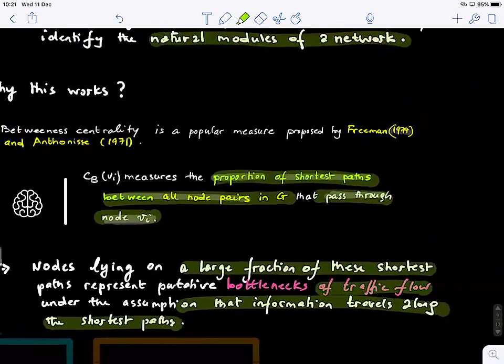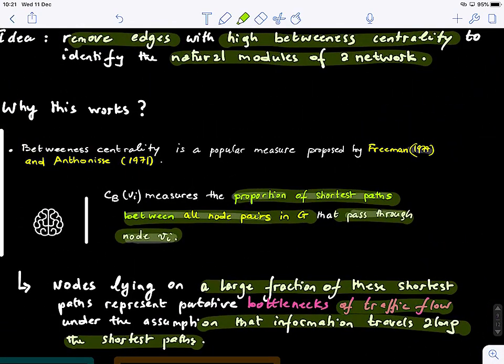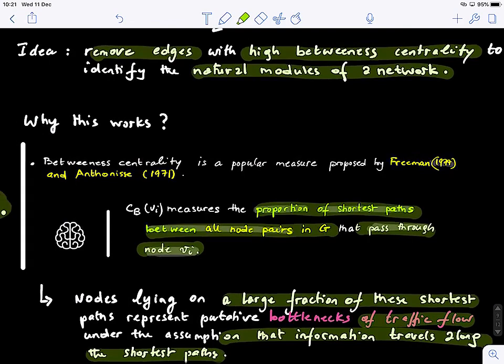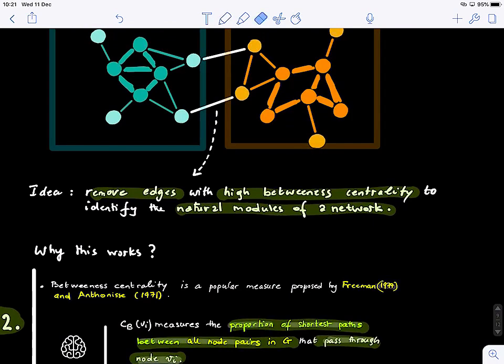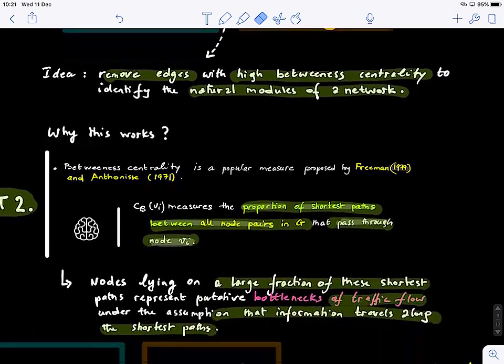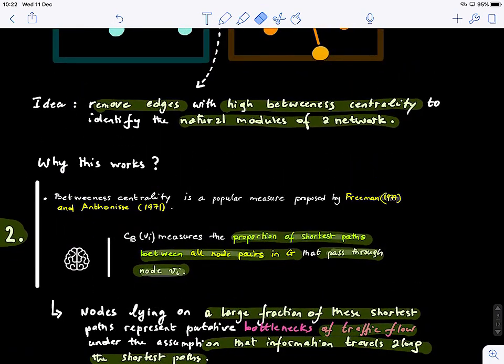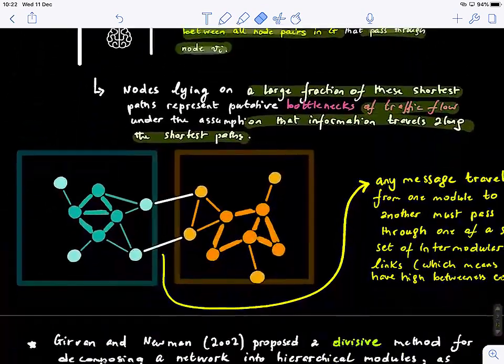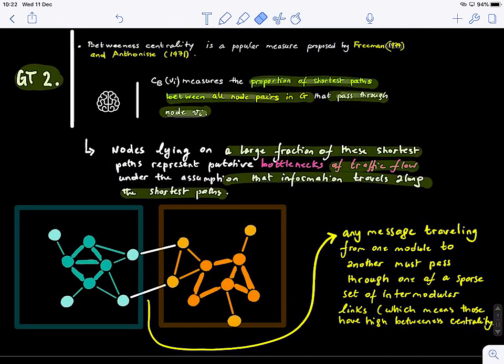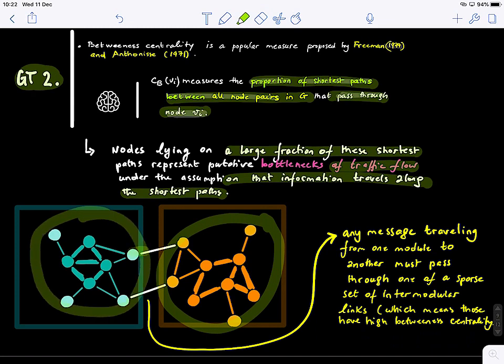So the nodes that are lying on a large fraction of these shortest paths represent putative bottlenecks of traffic flow under the assumption that information travels along the shortest paths. This assumption we have questioned before. We said information might not always travel along the shortest path, but given that assumption, we can say that these are bottleneck edges. So all information should go through these edges.